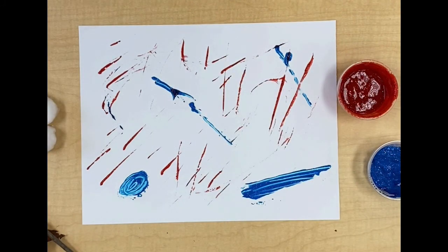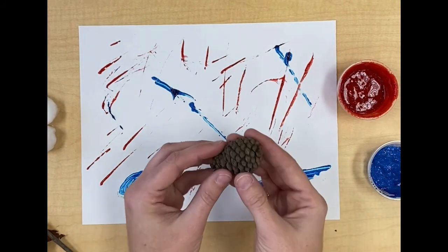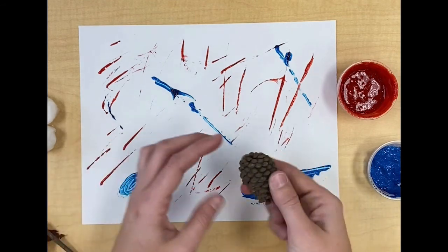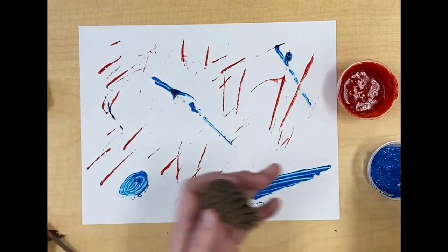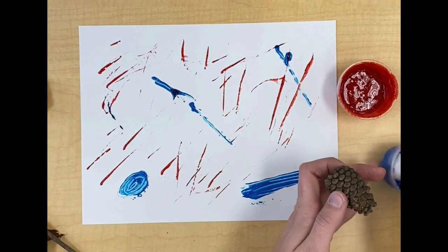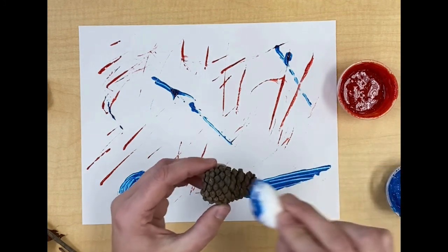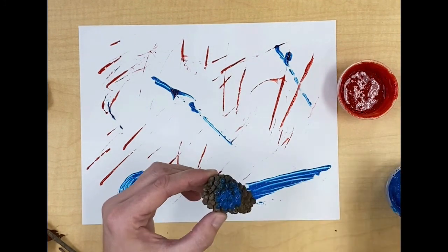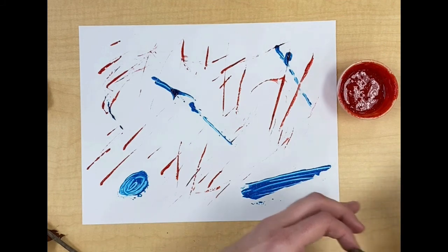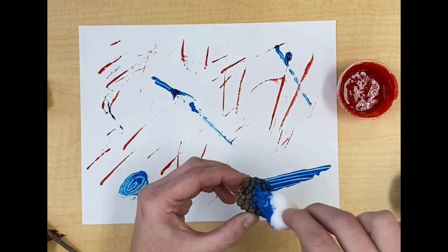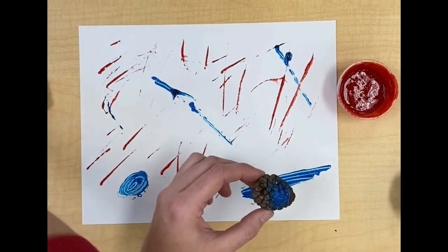Now for this next part I'm going to see if I can use my pine cone. I kind of want to see if I can roll it. So I think I'm going to use my cotton ball. Put some paint on here and we'll see what happens. I'm not sure if it's going to work out.